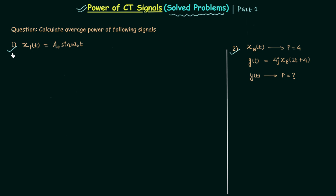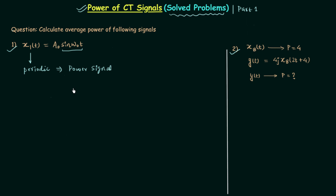Let's see the solution of the first problem. The signal is x1t and it is equal to a0·sin(ω0t). Since we have sin(ω0t) in signal x1t, this means x1t is a periodic signal where a0 is the amplitude. Since x1t is a periodic signal, this implies x1t is a power signal, and as we saw previously, periodic signals are always power signals — so the average power is going to be finite.